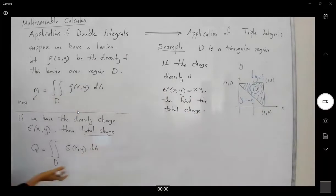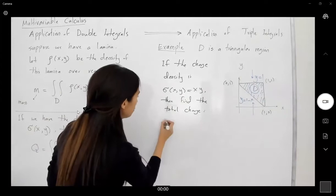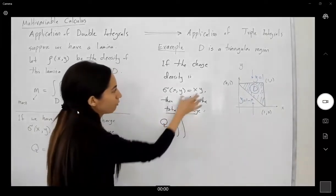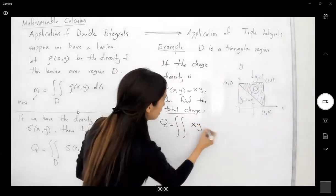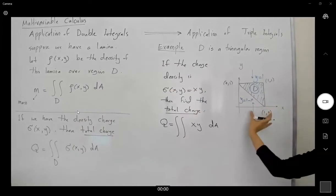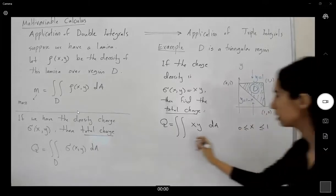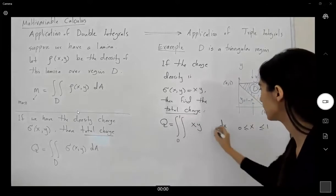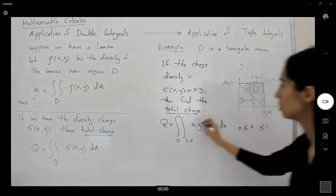Okay, to find the total charge, we know that we have a nice iterated integral. So we know that Q, or the total charge, is equal to double integral of the density function. In this case, here you have charge density, which is xy dA. Well, as you can see, x is bounded between 0 and 1. So let's write it down, 0 to 1. So my outer integral is with respect to dx, my inner integral with respect to dy, and my y range is between 1 minus x to 1.